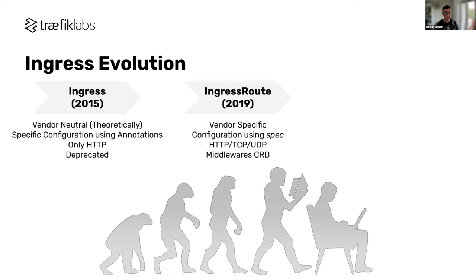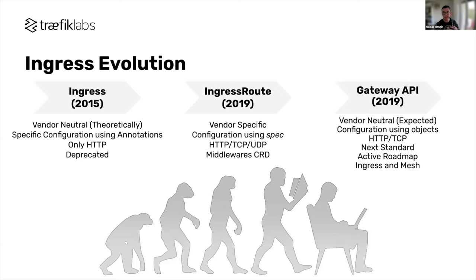With Ingress you had to add vendor-specific annotations. First the simplicity promise was broken because annotations are not easy to maintain, and second the vendor-neutral promise was broken because of vendor-specific annotations. That's why in 2019 we wrote our own specification — IngressRoute CRDs — supporting TCP/UDP on top of HTTP, with our own middleware objects for easier maintenance. Everything is defined in the spec section of the CRD, structured and validated. At the end of 2019 work began on a new standard beyond Ingress — Gateway API — which was released as v1 at the end of 2023.